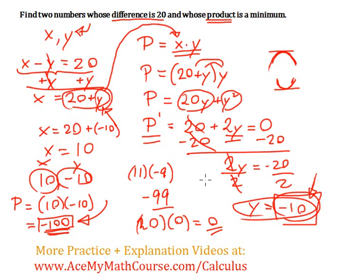that basically shows that since we know that we have a critical value when y is negative 10, because we set the derivative equal to 0 and solved for y, this is actually the minimum possible product. Great, right? So that is the case. The two numbers are actually 10 and negative 10. That's it.